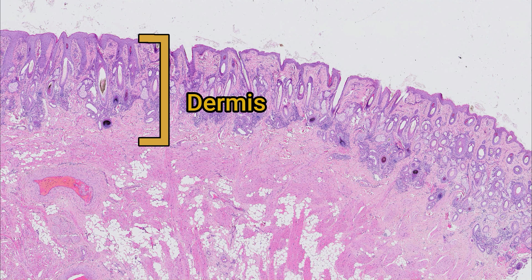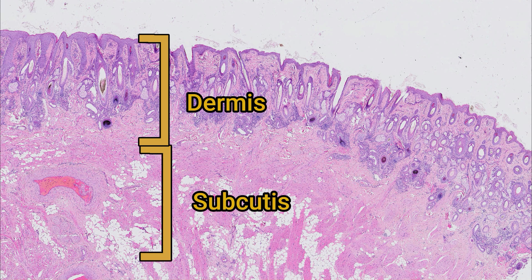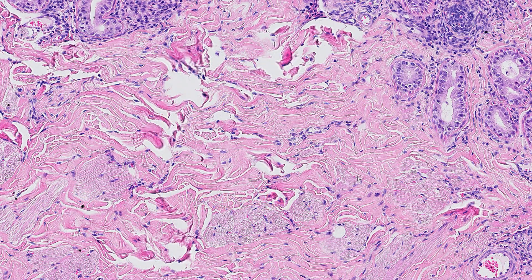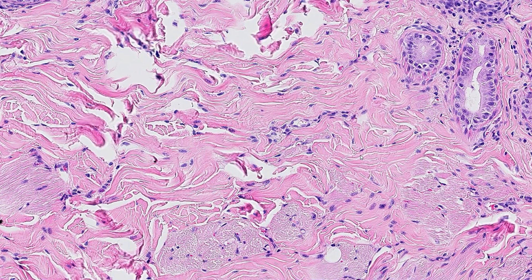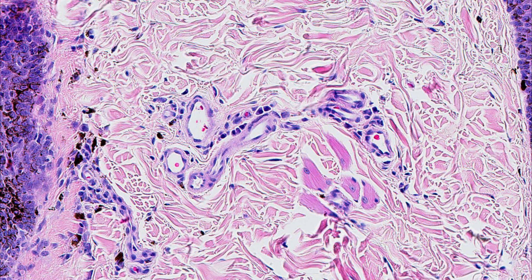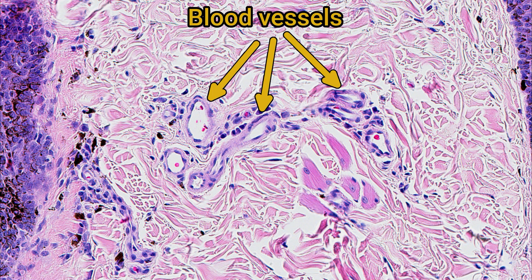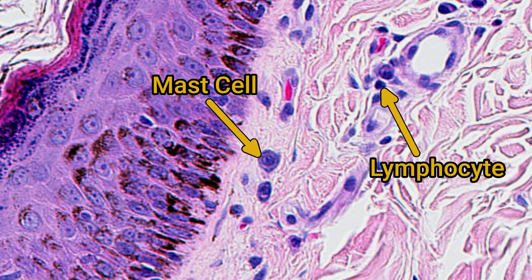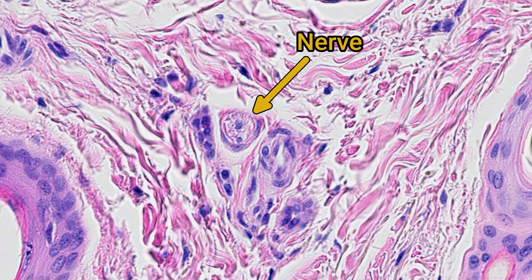The dermis is the area from the epidermal basement membrane to the subcutaneous adipose tissue. Histologically, it's not too interesting. You'll see lots of bundles of fibrillar eosinophilic material with a few cell nuclei dotted around — these are collagen bundles and the fibrocytes that produce and maintain them. You'll find scattered blood vessels, sometimes with inflammatory cells clustered around them, usually lymphocytes and plasma cells, but also a few mast cells with more granular cytoplasm. In some areas, you'll also see small nerves heading towards the epidermis.